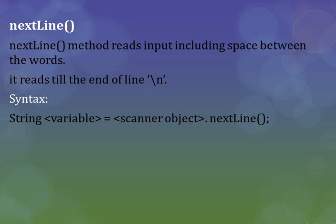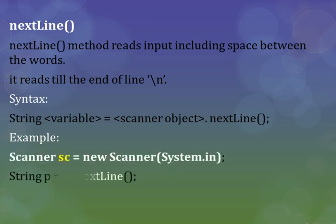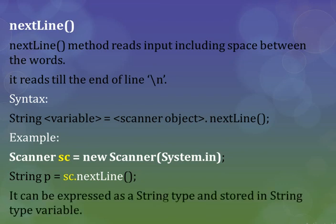For the nextLine() example, first create a Scanner object sc. Then declare a String variable p — String p — which becomes a string type variable. Then use sc.nextLine() to read the full input. Using nextLine() we can accept a full string from the user. It can be expressed as a string type and stored in a string type variable.